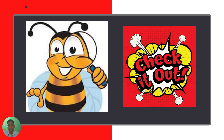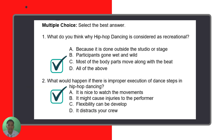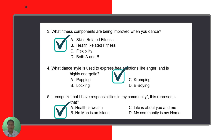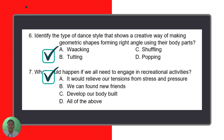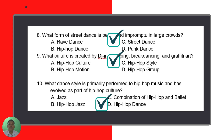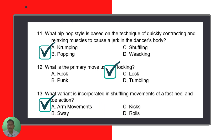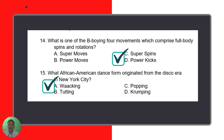Let's check your answers. Number one: D. Number two: B. Number three: B. Number four: C. Number five: B. Number six: B. Number seven: A. Number eight: C. Number nine: C. Number ten: D. Number eleven: B. Number twelve: C. Number thirteen: A. Number fourteen: D. And number fifteen: A.